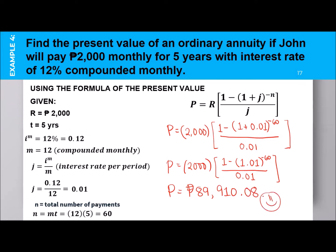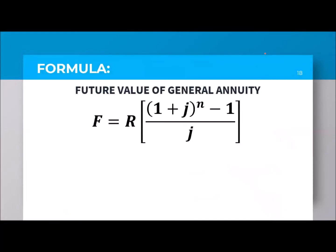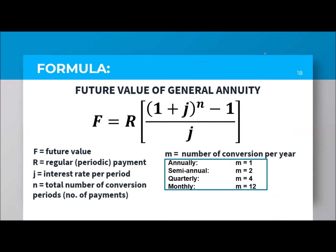I hope that is very clear regarding the future value and present value for the simple annuity. Remember: for simple annuity, the payment period and the interest period are the same. Now, for general annuity — the formulas are the same except for how we compute J, because there we need to do a conversion.